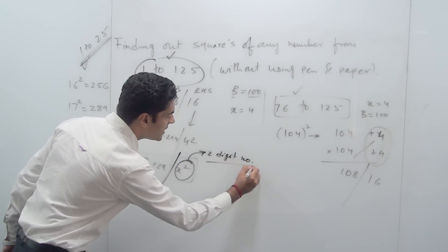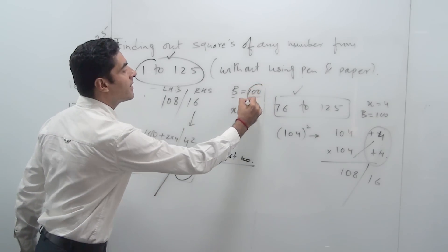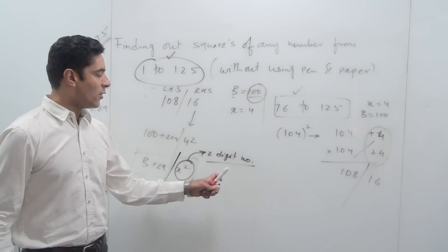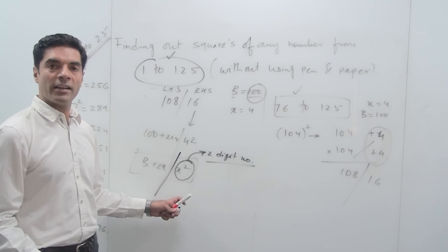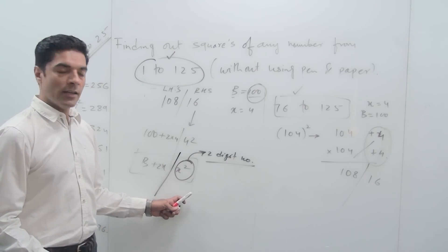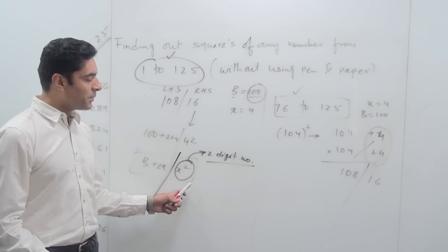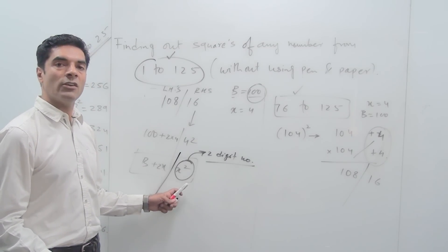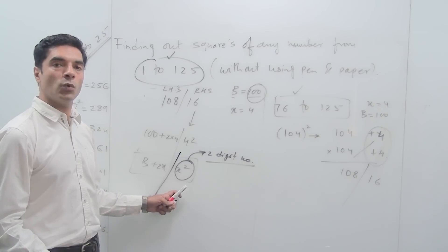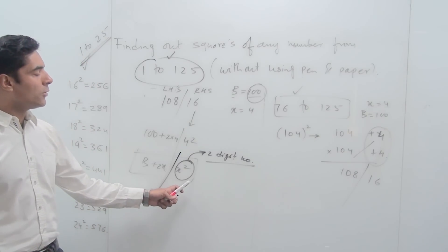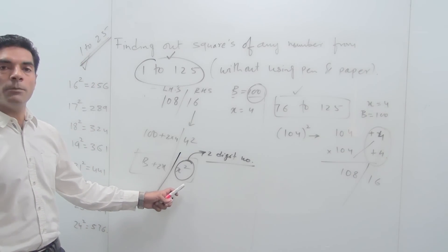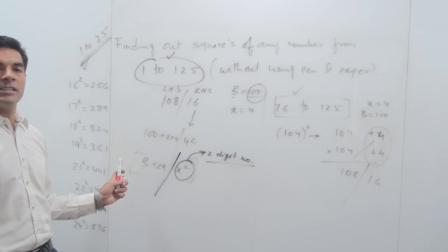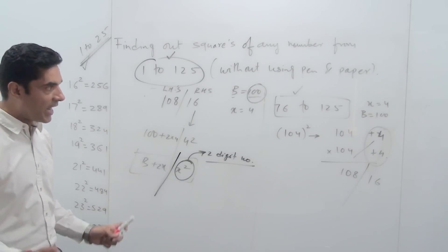Why is the right-hand side always a 2-digit number? Because our base is 100. In base 100, we cannot have anything less than 2 digits on the right-hand side. So in case it comes out to be a single digit number, you will have to put a 0 in front of it to make it a 2-digit number, and in case it comes out to be a 3-digit number, you will have to do a carry forward of the number at the 100's place.